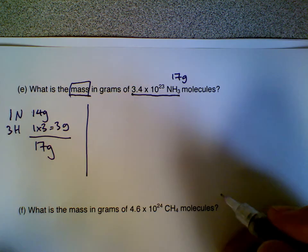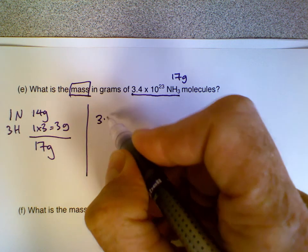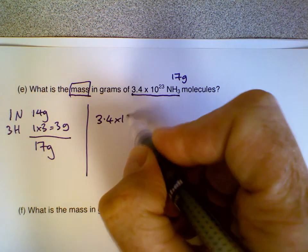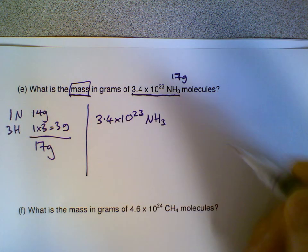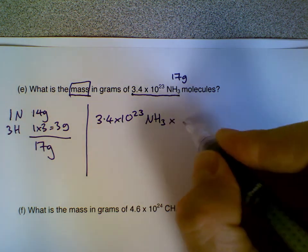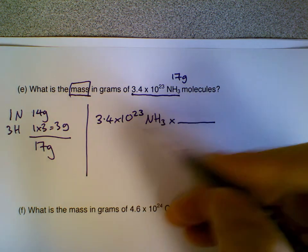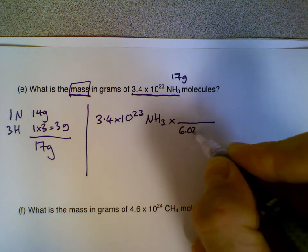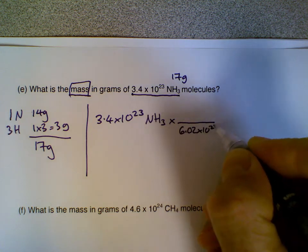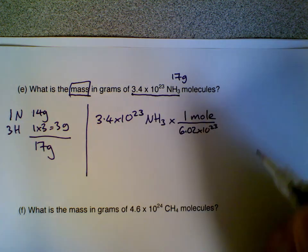Now we do the mole conversion. Factor label problem, we start out just writing down the number given in the question, 3.4 times 10 to the 23 NH3 molecules, a multiply sign, and then a line. We want to convert from the big number of particles, so we put 6.02 times 10 to the 23 on the bottom. We're going to convert to moles, so one mole on the top.